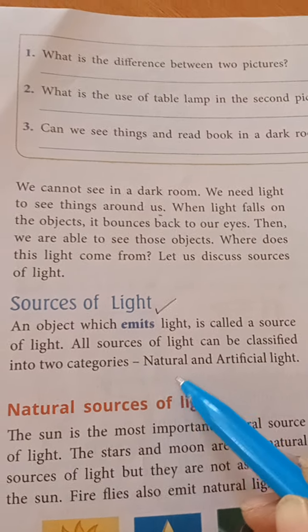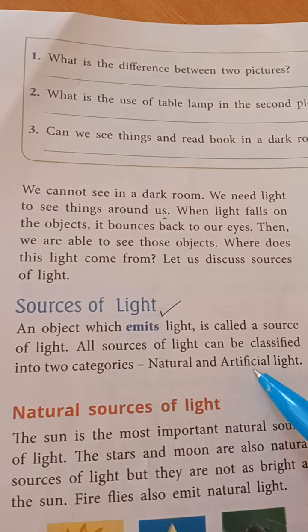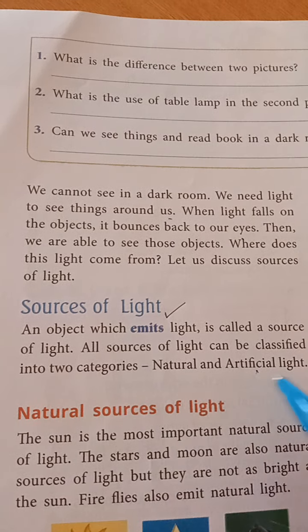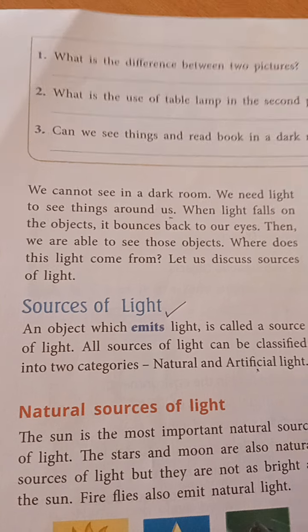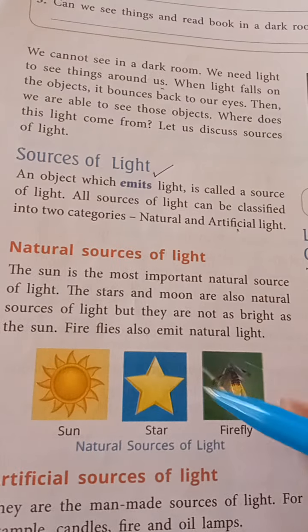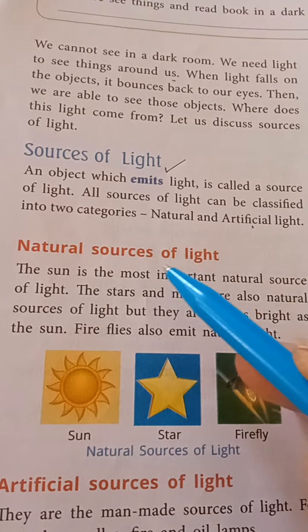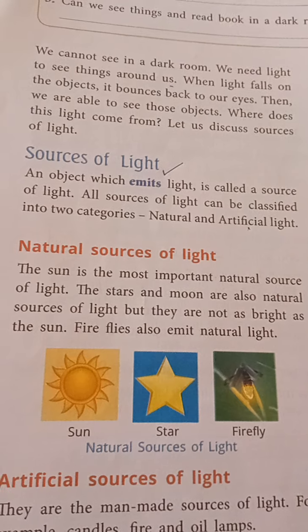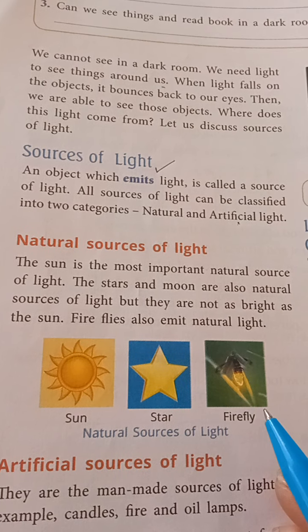All sources of light can be classified into two categories: natural and artificial light. First, see the natural sources of light.